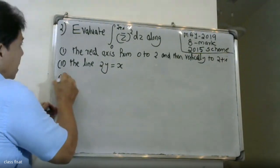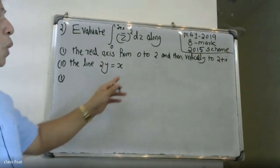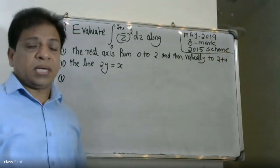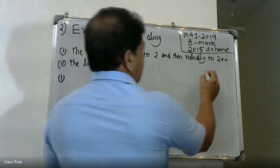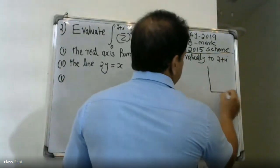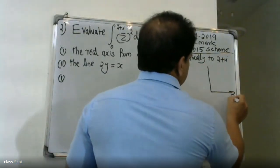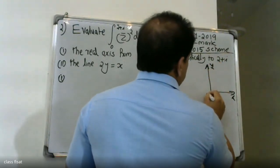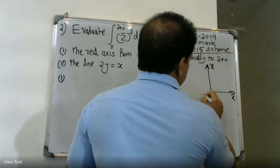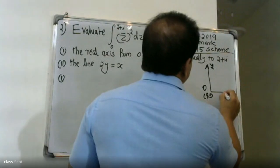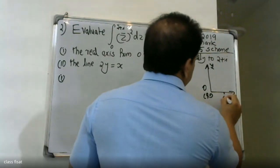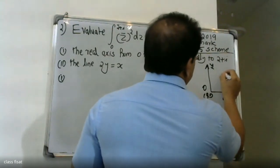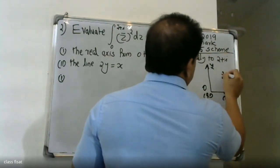The path: along the real axis from 0 to 2, and then vertically up to 2 plus i. This is the x-axis, this is the y-axis. The origin is (0, 0). We go from 0 to 2, reaching point (2, 0), and then up to (2, 1).